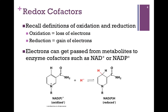Remember the definitions for oxidation and reduction: oxidation is loss of electrons, reduction is gain of electrons. When we oxidize these compounds in catabolism or reduce them in anabolism, those electrons are moved to temporary carriers before moving to their final location. These temporary carriers are cofactors — they are passed to these metabolites.